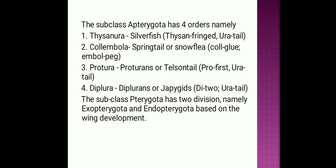Order Thysanura: 'Thysano' means three prolonged, referring to the three-pronged caudal tails present in this order. Silverfish are examples. More than 500 species present worldwide. Character features: primitive wingless insects showing no metamorphosis. Abdomen has eleven segments; three long tail filaments are present.